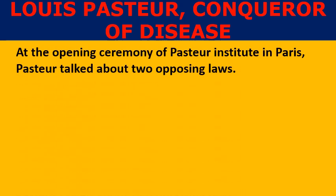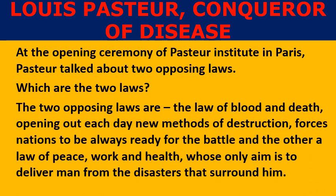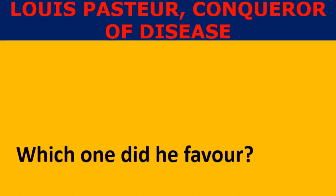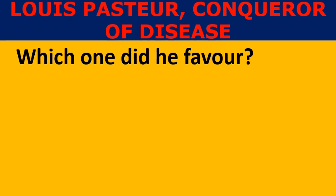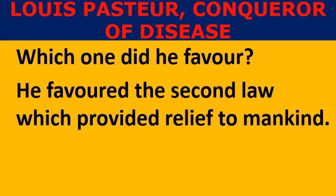At the opening ceremony of the Pasteur Institute in Paris, Pasteur talked about two opposing laws. What are those two laws? The first is the law of blood and death, opening out each day new methods of destruction, forcing nations to be always ready for battle. The other is the law of peace, work, and health, whose only aim is to deliver man from the disasters that surround him. Louis Pasteur favored the second law, which provided relief to mankind.